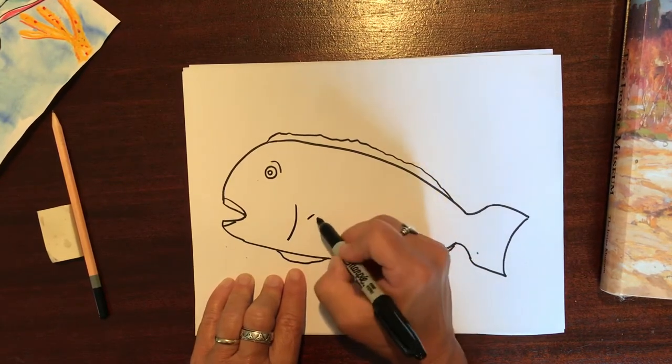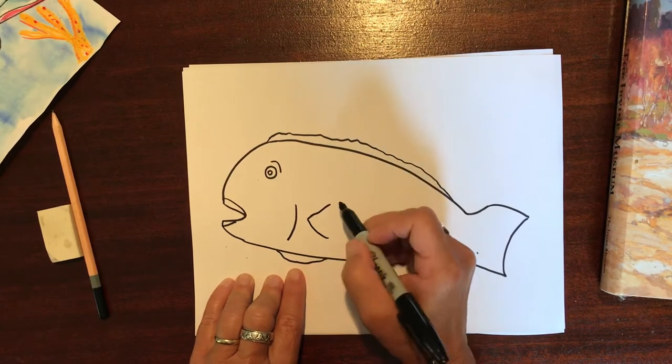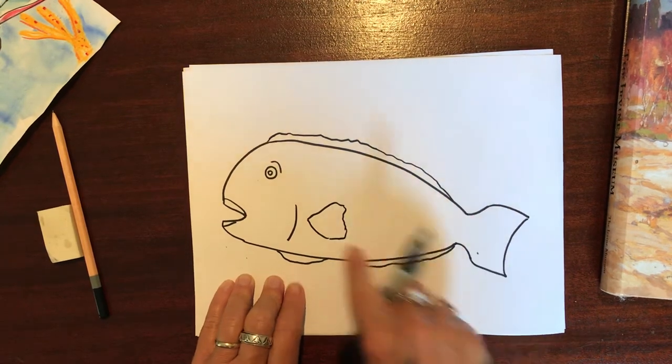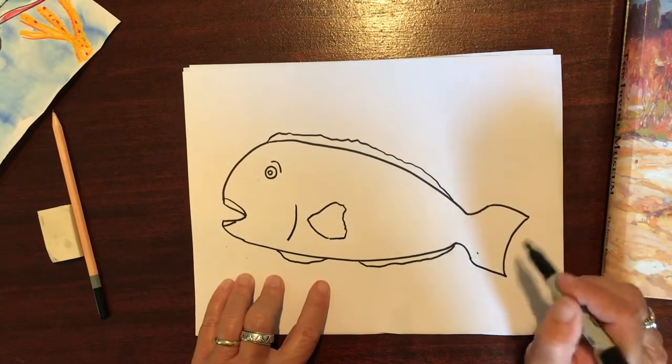Remember, I like to call these the Nemo fins, but this is what helps them steer, the pectoral fin. So you kind of go a diagonal up and a diagonal down, and then give it a little wiggle until that meets, and there you have your basic parrotfish.